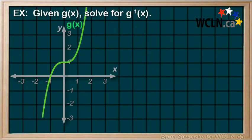Let's do an example. Given g in terms of x, as shown below, sketch, well, we know that that means the inverse of g in terms of x. So, let's start by drawing our reflection line. y equals x.